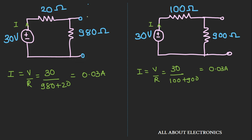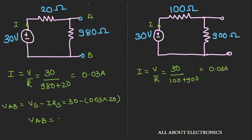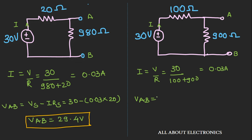Now let's find the voltage that appears across the load resistance. For the first source, the voltage VAB is given as Vs minus I times Rs, that is 30 minus 0.03 times 20 ohms, so VAB comes out to be 29.4V. For the second voltage source, VAB equals Vs minus I times Rs, that is 30 minus 0.03 times 100 ohms, giving VAB equal to 27V.